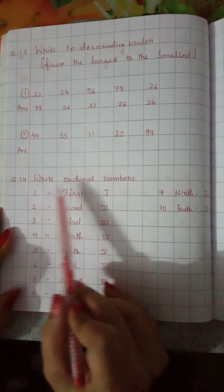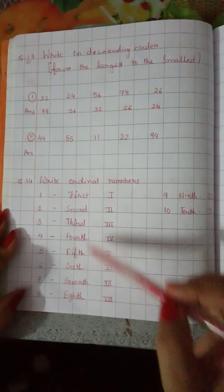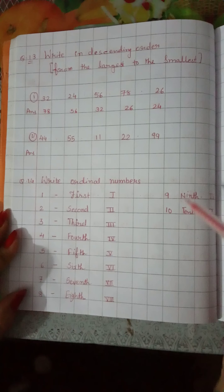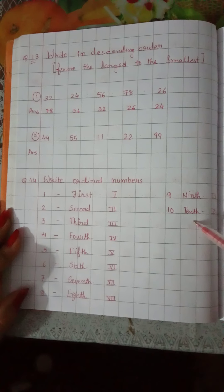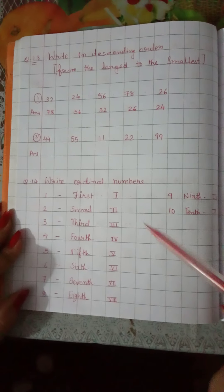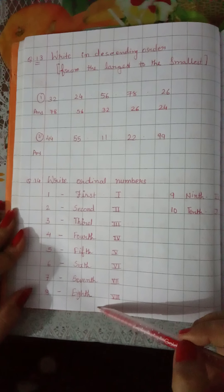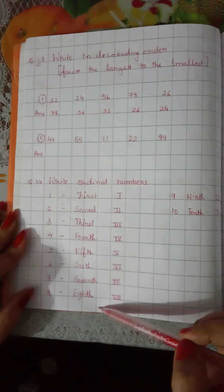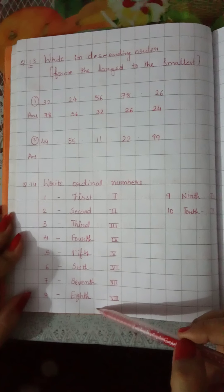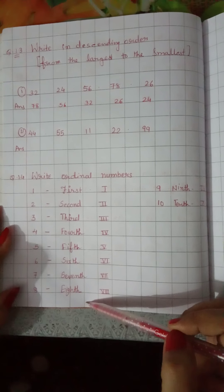Question number 14: write ordinal numbers. These numbers I already explained in the previous video as well. You just copy from this page and write it down in your CW book. Thank you, have a nice day.